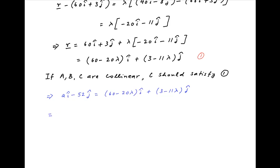Equating the coefficients of i and j across the left hand side and the right hand side we get A is equal to 60 minus 20 lambda and minus 52 is equal to 3 minus 11 lambda.